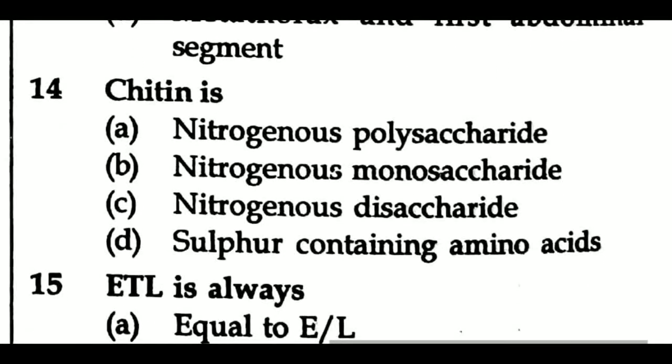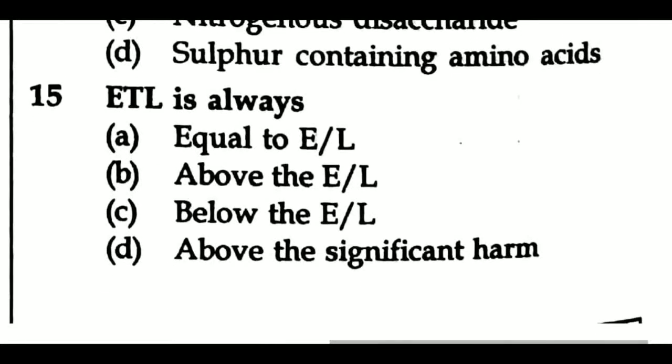Question 14: Chitin is — Option A: nitrogenous polysaccharide, Option B: nitrogenous monosaccharide, Option C: nitrogenous disaccharide, Option D: sulfur containing amino acids. Question 15: ETL is always — Option A: equal to E/L, Option B: above the E/L, Option C: below the E/L, Option D: above the significant harm level.